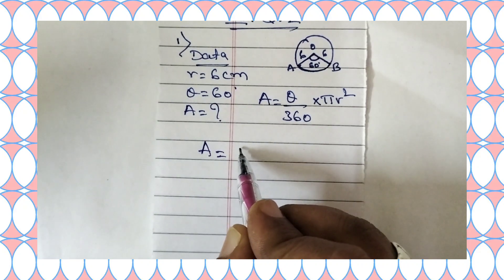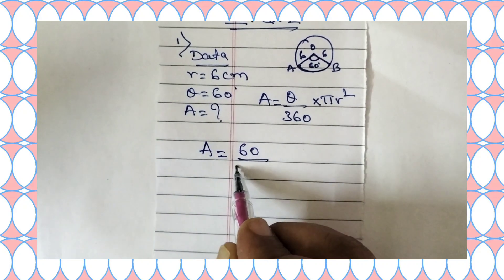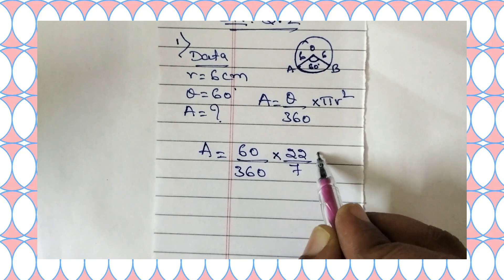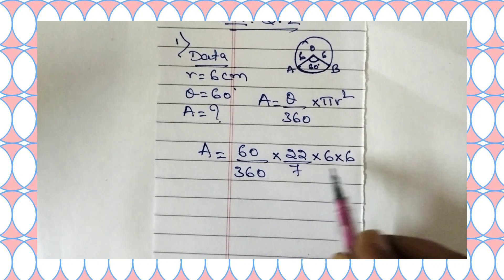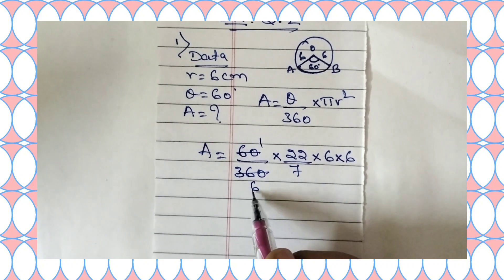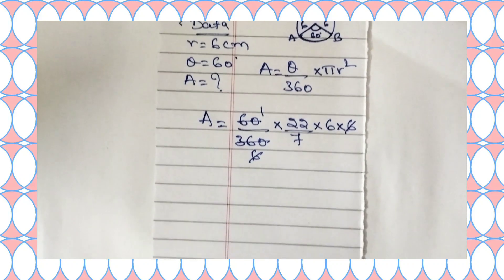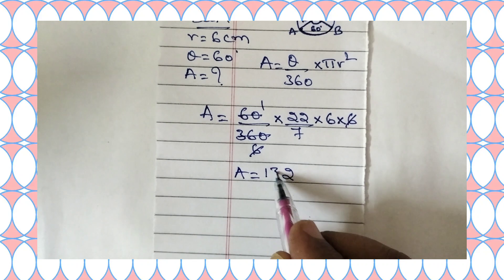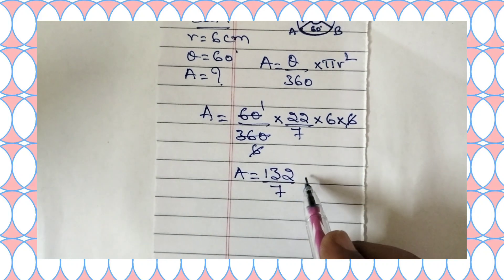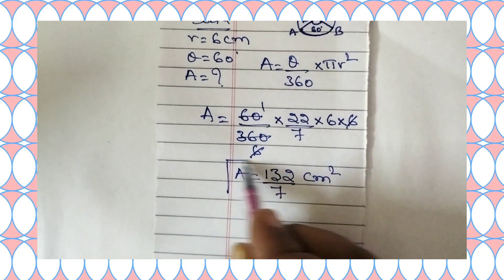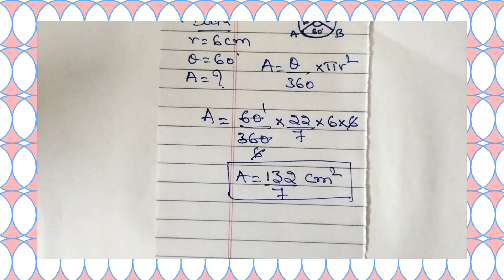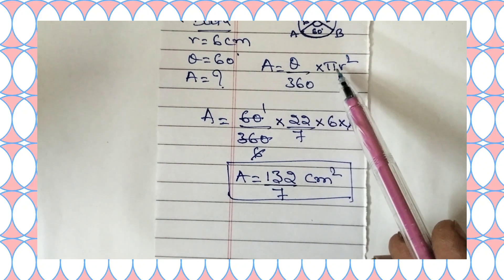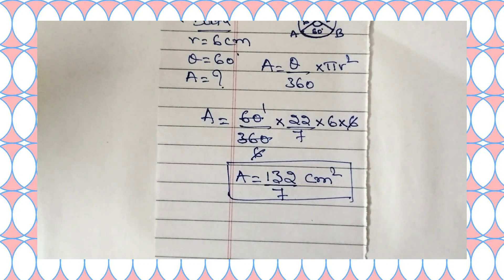Area is equal to 60 degrees divided by 360 into pi (22 by 7) into 6 into 6. 60 and 6 get cancelled, giving 132 divided by 7 centimeter square. So this is the area of the sector. By using the formula area equals theta by 360 into pi r square, we found the area of the sector to be 132 by 7 centimeter square.